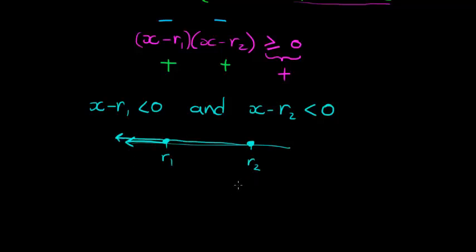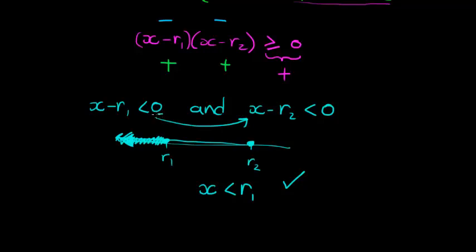That's like saying I'm younger than 50 and younger than 40 — no problem. I can summarize that by just saying x ≤ r1, because r2 is bigger, and if I have to be smaller than both r2 and r1, I can just summarize it as x ≤ r1. Sorry — equal to sign included there.